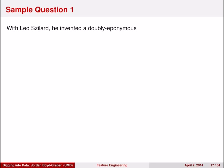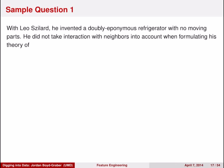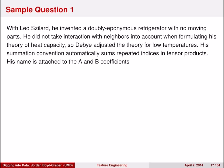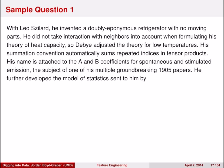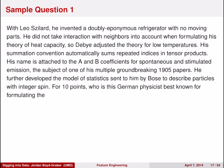With Leo Szilard, he invented a doubly eponymous refrigerator with no moving parts. He did not take interaction with neighbors into account when formulating the theory of heat capacity. So Debye adjusted the theory for low temperatures. His summation convention automatically sums repeated indices and tensor products. His name is attached to the A and B coefficients for spontaneous and stimulated emission, the subject of one of his multiple groundbreaking 1905 papers. He further developed the model of statistics sent to him by Bose to describe particles with integer spin. For 10 points, who is this German physicist best known for formulating the special and general theories of relativity.